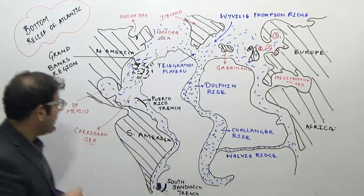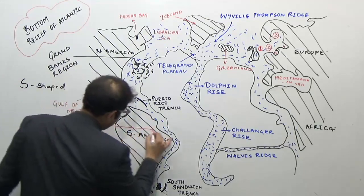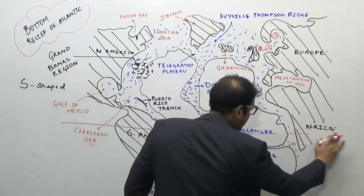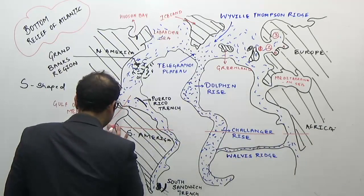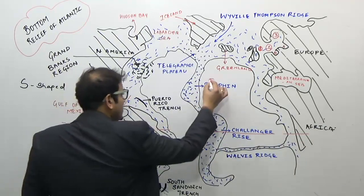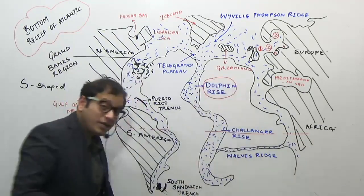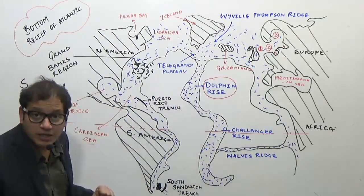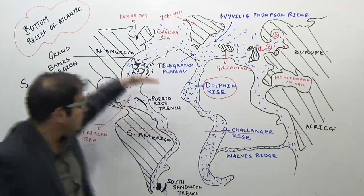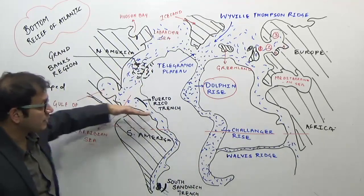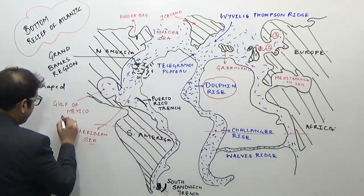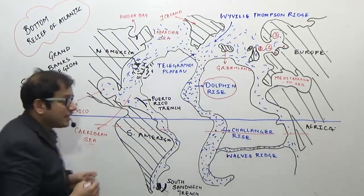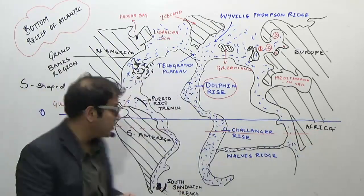The mid-oceanic ridge in the Atlantic Ocean is the best example of a mid-oceanic ridge, showing the S-shape of an ocean. The mid-oceanic ridge is divided into two parts based on hemisphere. The mid-oceanic ridge in the Northern Hemisphere is known as the Dolphin Rise, while the name of the mid-oceanic ridge in the Southern Hemisphere is the Challenger Rise.